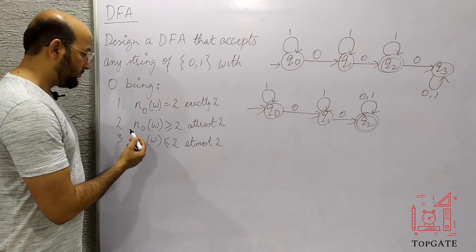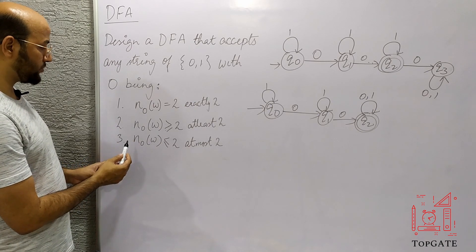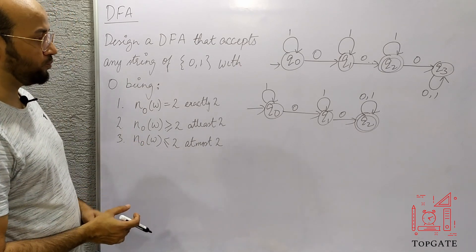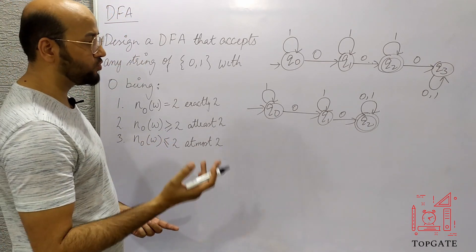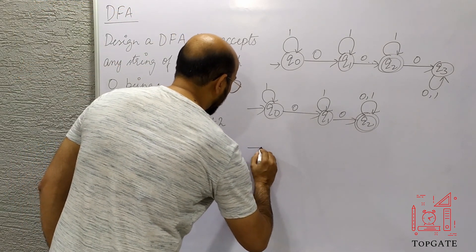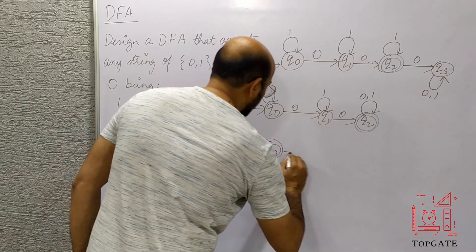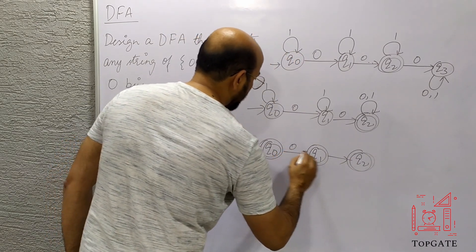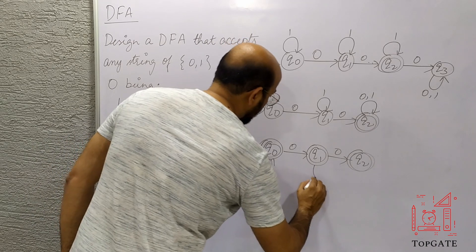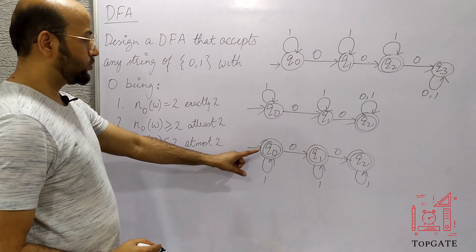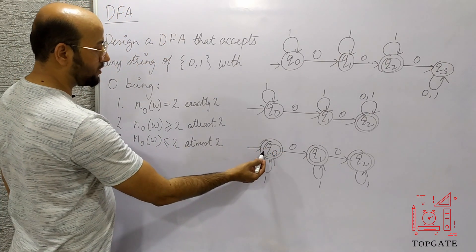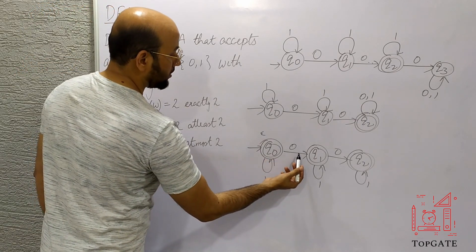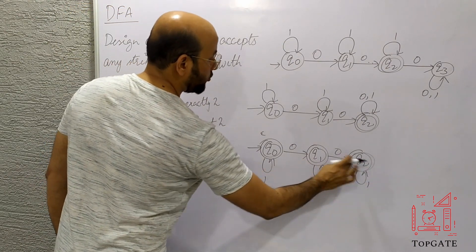Case 3 — at most 2 zeros. The number of 0s can be 0, 1, or 2, but not more than 2. We start with state Q0 and make it final, since 0 zeros is acceptable. On input 0 go to Q1 — also final. On another 0 go to Q2 — also final. Add self-loops on 1 at Q0, Q1, and Q2. The number of 0s at Q0 is 0, at Q1 is 1, and at Q2 is 2.